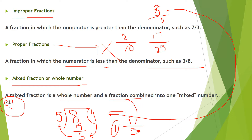In the mixed number there is a whole number as well as a fraction combined. To convert back to an improper fraction, multiply the denominator by the whole number, then add the numerator: 5 × 1 + 3 = 8, giving 8/5.